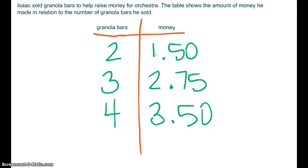Write this down along with the table, and you can see that for two granola bars, he made $1.50. For three, he made $2.75, and so on and so forth. Pause and copy this problem down.